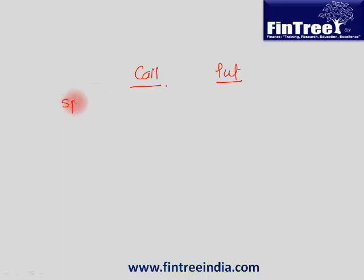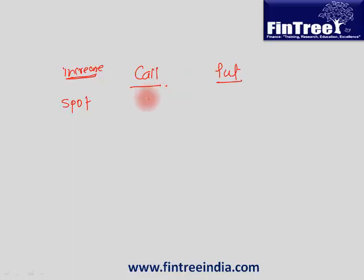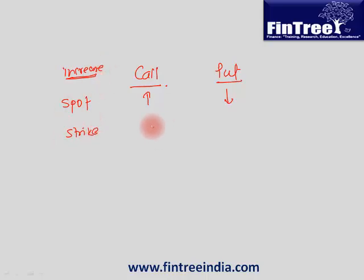The first variable that we saw is called spot. When spot price increases, value of call option will increase and value of put option will decrease, because as a call option you want that spot price to increase. If strike price is higher, value of call option would be lower but put option would be higher, because you want a right to sell at a higher price.